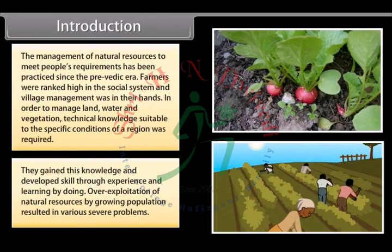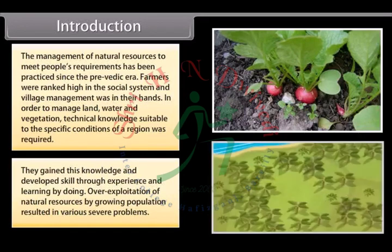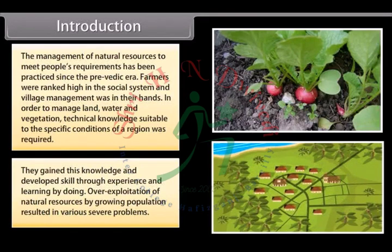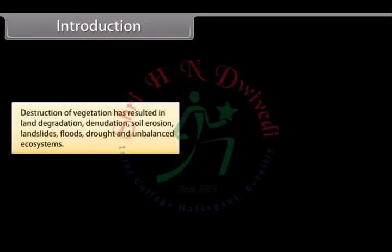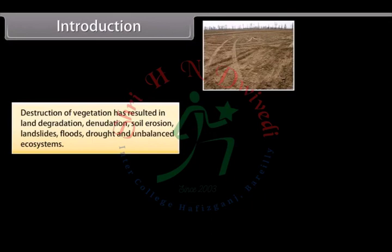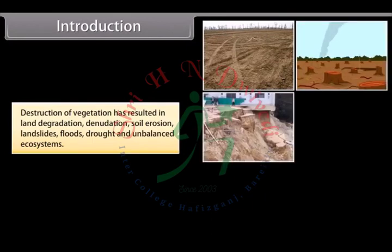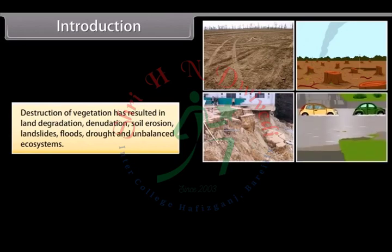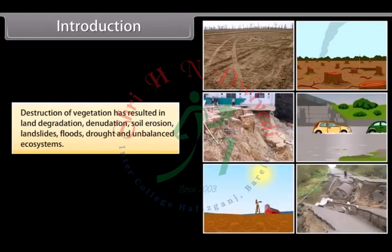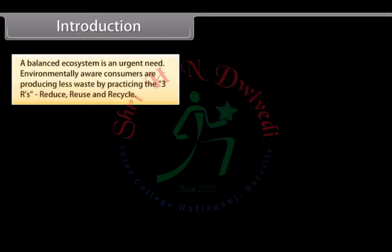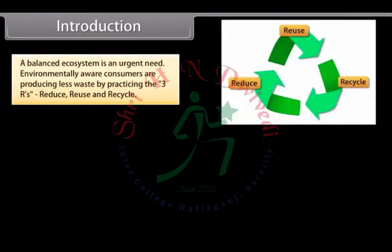Over-exploitation of natural resources by a growing population resulted in various severe problems. Destruction of vegetation has resulted in land degradation, denudation, soil erosion, landslides, floods, drought and unbalanced ecosystems. A balanced ecosystem is an urgent need.